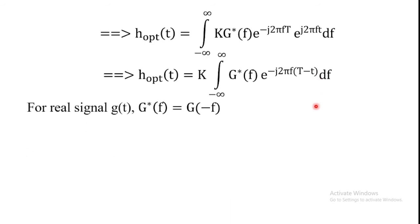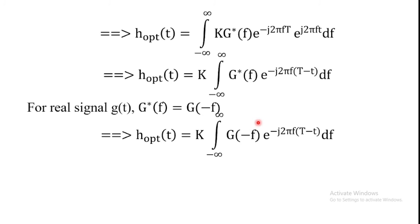For a real-valued signal g(t), the condition is G*(f) = G(-f). Applying this condition, we get the optimum value of the filter: h_optimum(t) = k · integral from minus infinity to infinity of G(-f) · e^(-j2πf(T - t)) df.